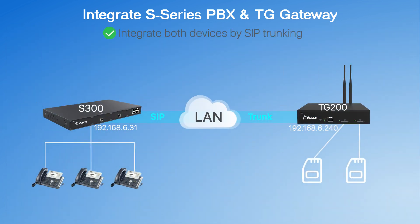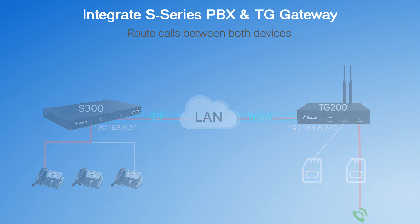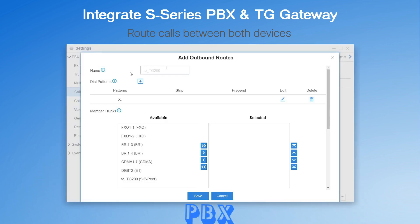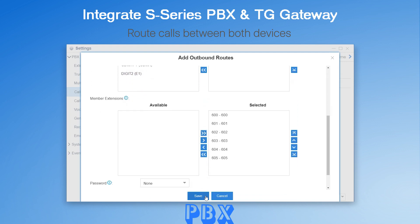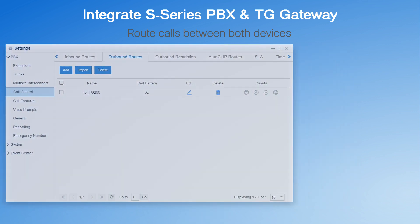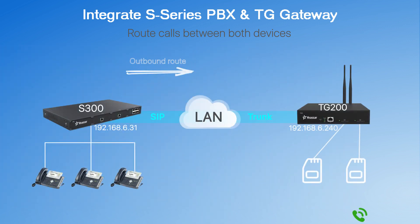Once the trunk between the two devices works, we configure call routing so that extension users of the PBX can make and receive calls through the SIM cards inserted in the gateway. On the PBX, create an outbound route to send outgoing calls to the gateway. Then go to the gateway to route incoming calls from the PBX out to the final destination.